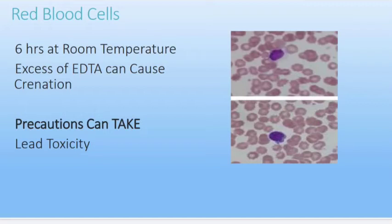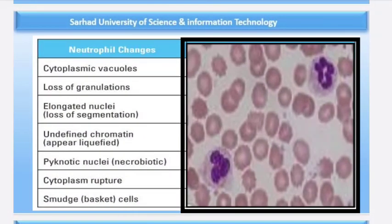In fresh blood films, platelets usually clump, making it less easy to estimate the platelet count from inspection of the film. Such films are nevertheless of particular value in investigating patients suffering from purpura. In certain rare conditions, the absence of platelet clumping is a useful pointer to the diagnosis. An expert eye can observe all these changes, but morphological or degenerative changes should prompt looking toward the white blood cell count or other secondary causes.